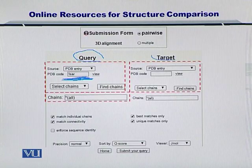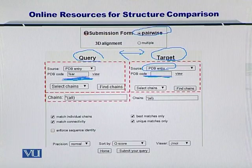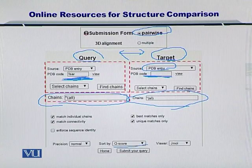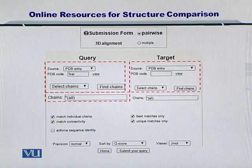Also, for the target, you can specify the target's PDB entry here and the software will compare the structures of these two proteins using pairwise comparisons. Moreover, you can look at the chains that are there in these two proteins and you can select which ones you want to compare. In the end, you can sort by their scores and submit your query. This was the case where you were trying to compare a query protein with a target protein, or simply two proteins.